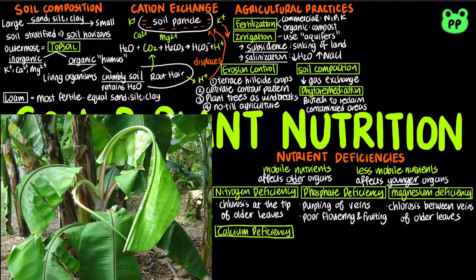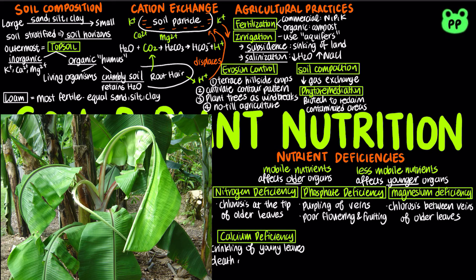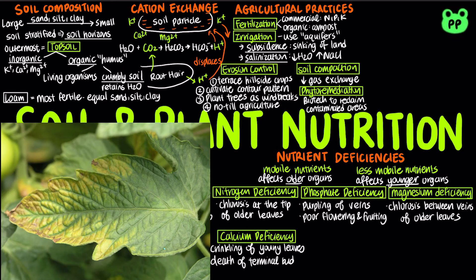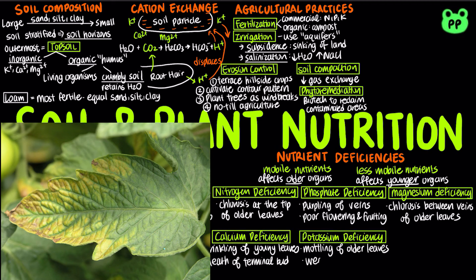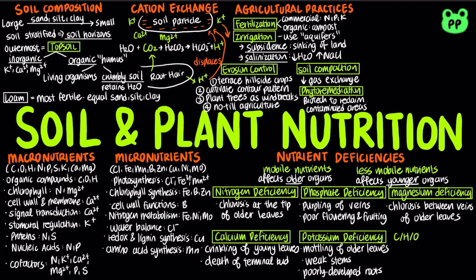Calcium deficiency leads to crinkling of younger leaves and death of terminal buds. Potassium deficiency leads to molding of older leaves, weak stems, and poorly developed roots. Deficiency in carbon, hydrogen, and oxygen leads to poor growth.